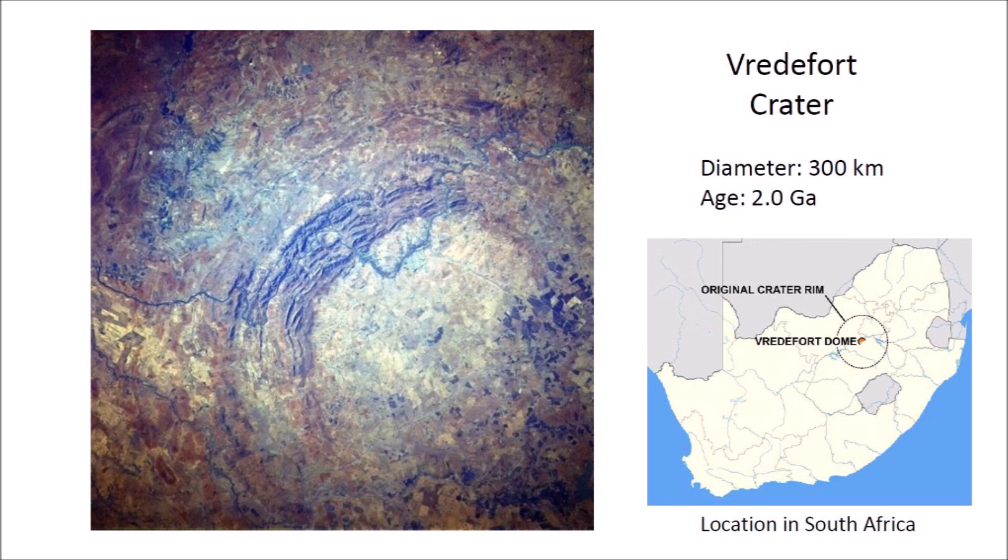This image of the Vredefort dome in South Africa was taken from the NASA Space Shuttle in 1985. The Vredefort impact structure is the biggest confirmed crater on Earth and it is roughly 2 billion years old. The original crater is thought to be up to 300 kilometers in diameter, but it has largely eroded away. The impact exposed some of the oldest rocks on the planet, ranging from 2.1 to 3.5 billion years in age.